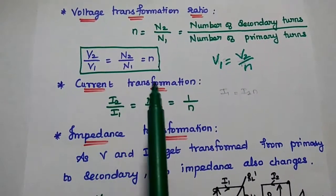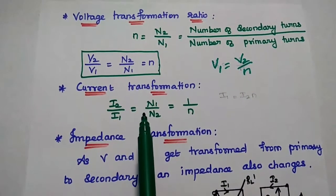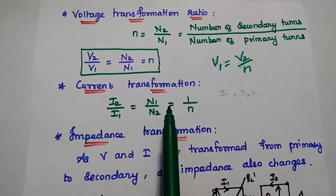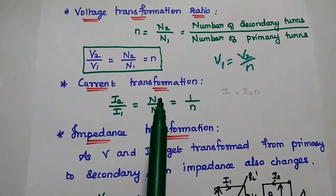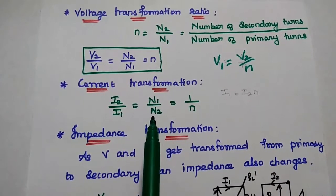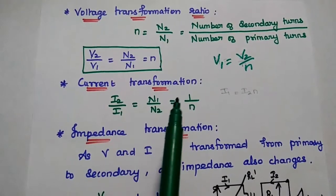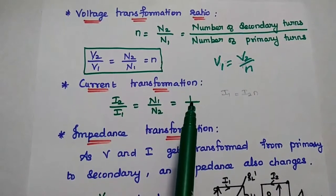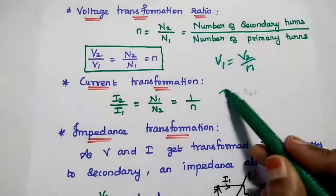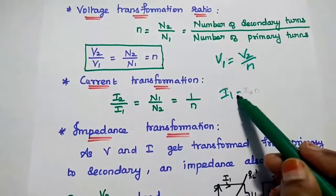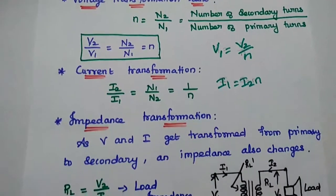Next, current transformation ratio is represented as the ratio of the number of primary turns to the number of secondary turns. That is N1 by N2, which is equal to I2 by I1. It can also be represented as 1 by n. From this, we can get the value of I1 is equal to I2 multiplied by small n.